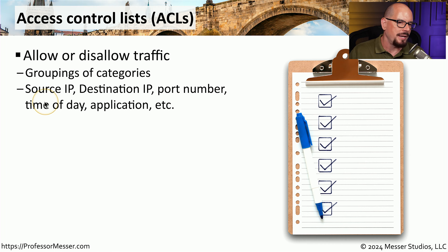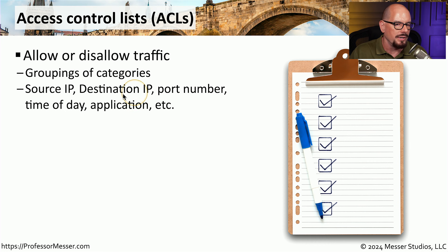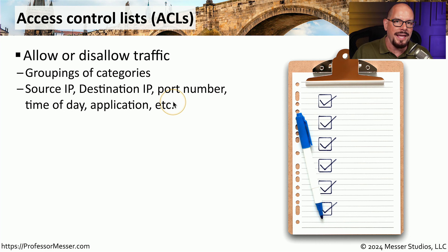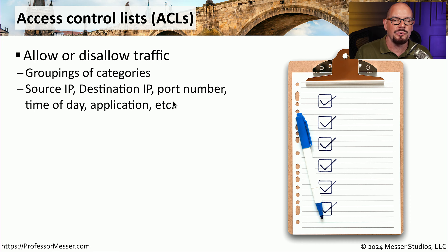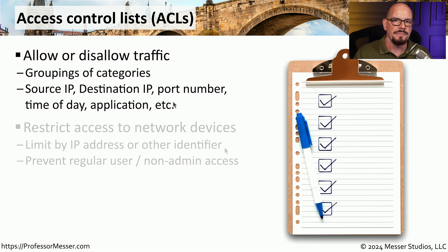For example, you might want to use source IP address, destination IP address, a port number, a time of day, or an application, and combine all of those together to create a rule where traffic may be allowed or disallowed.